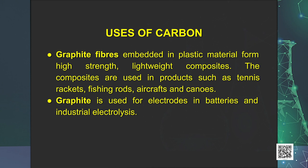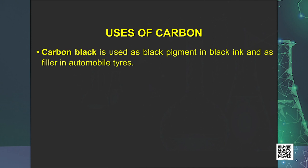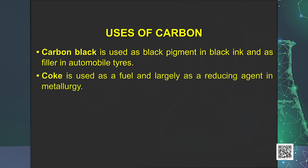Crucibles made from graphite are inert to dilute acids and alkalis. Carbon black is used as black pigment in black ink and as filler in automobile tires. Coke is used as a fuel and largely as a reducing agent in metallurgy.